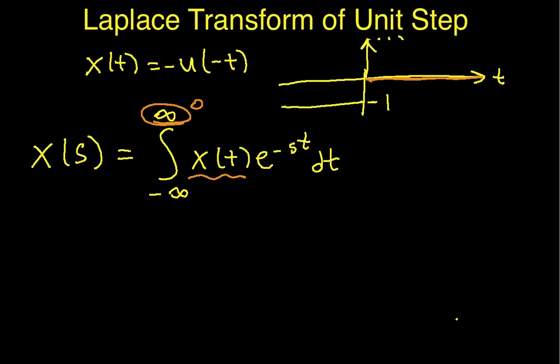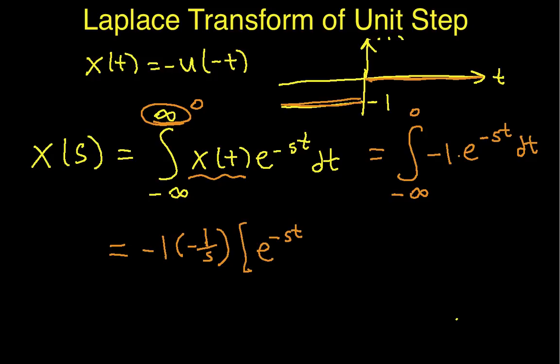Between minus infinity and zero, x of t is equal to minus one. So our integral becomes the integral from minus infinity to zero of minus one times e to the minus s t dt. Now I can just work the integral and I'm going to get minus one times minus one over s of e to the minus s t going from minus infinity to zero.